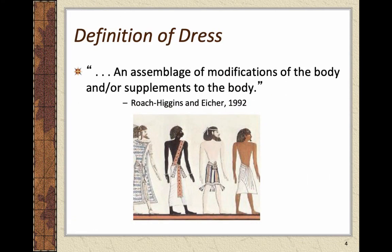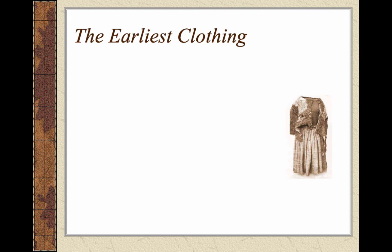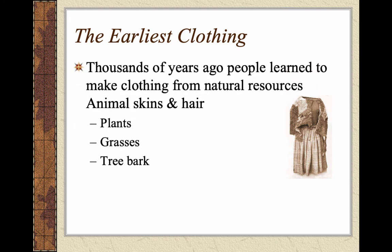So what do we mean by dress? An assemblage of modifications of the body and or supplements to the body. This is important because dress isn't just pieces of cloth put on top of the body — it also includes grooming, hair, makeup, what they're doing to the skin, accessories like shoes and other pieces. It includes not just clothing or pieces of cloth.